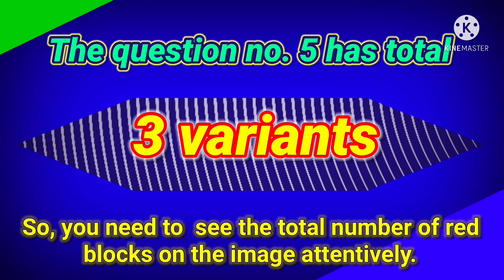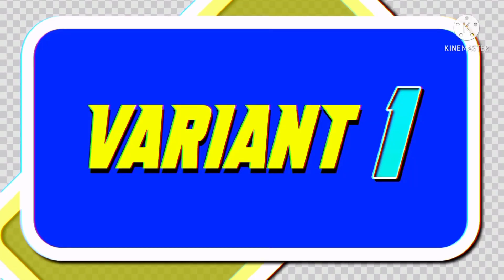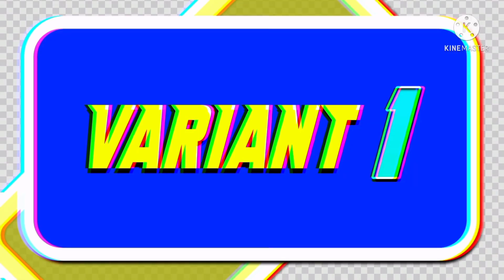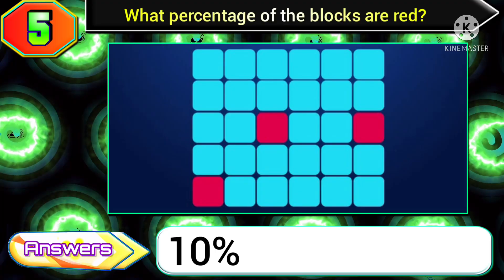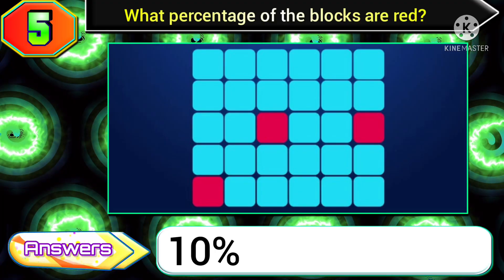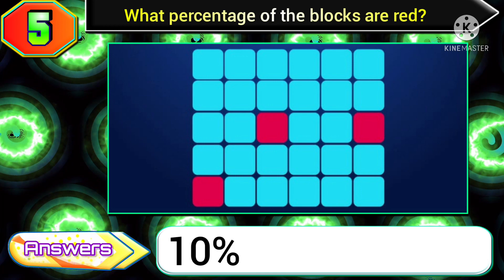Question number 5 has a total of three variants, so you need to see the total number of red blocks on the image attentively. In variant 1 of this question, if you get the total number of red blocks as 3, then you need to select the option 10 percent.